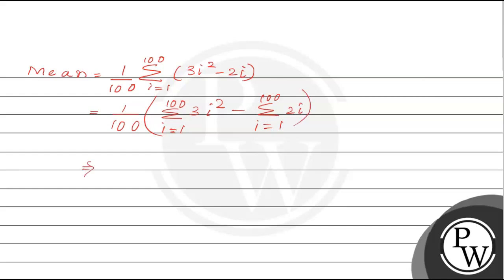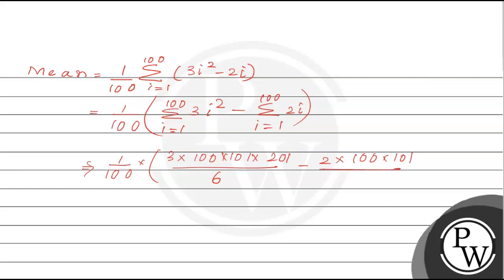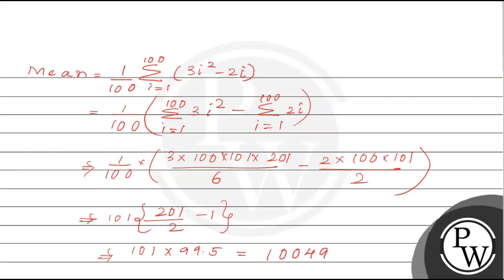Now we apply the sum of squares and sum of natural numbers formulas. We get 1/100 times [3 times (100 times 101 times 201)/6 minus 2 times (100 times 101)/2]. On simplifying, the numerator becomes 101 times 201/2 minus 1, which gives 101 times 99.5, equal to 10,049.50.